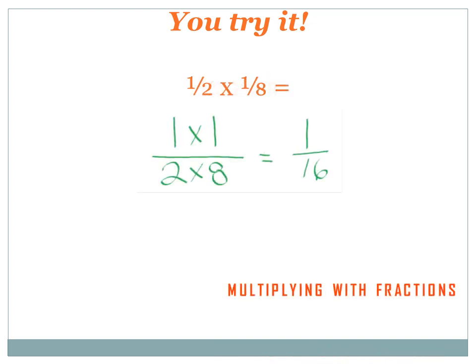This one's kind of easy. I just multiply the two numerators, and then I multiply the two denominators, and sometimes I'm going to have to simplify. The numerators are both 1, so the top of the resulting fraction is 1 times 1. The denominators are 2 and 8, so the bottom of the resulting fraction is 2 times 8. I multiply 1 times 1 and I get 1, and I multiply 2 times 8 and I get 16, so the answer is 1 over 16.